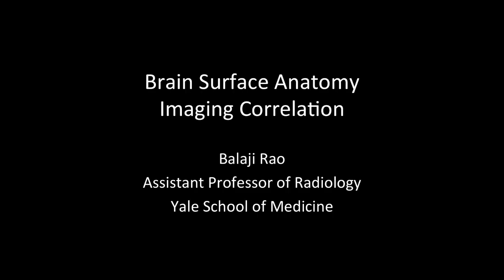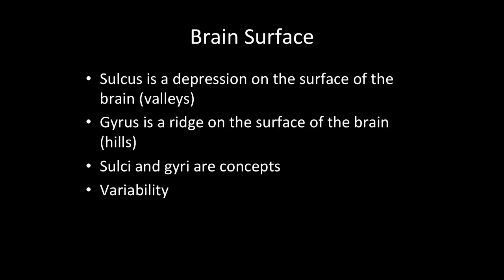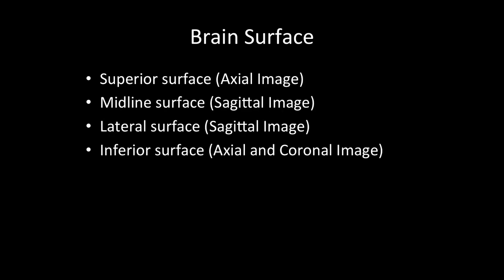This is Balaj Rao from Department of Radiology. In this video I'm going to explain how to identify surface anatomy of the brain on CT and MRI scans. The surface of the brain is very convoluted and complex, with multiple sulci — depressions resembling valleys — and gyri, which are like ridges or hills on the surface. Sulci and gyri are concepts and there is going to be a lot of variability from right to left, anterior to posterior, and from one person to another. I will start with the superior surface, then the midline surface, then the lateral surface, and finally the inferior surface of the brain.